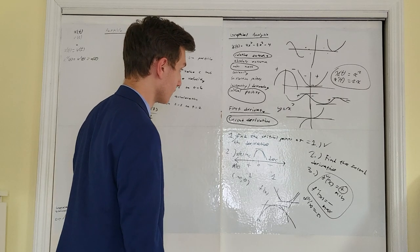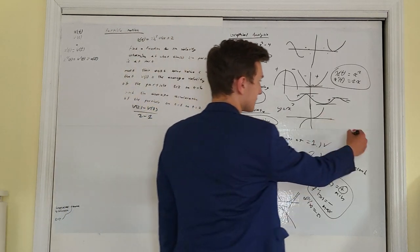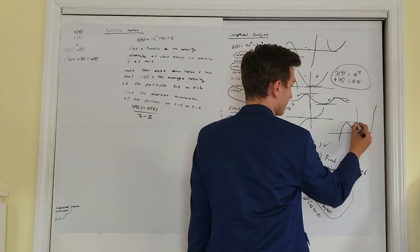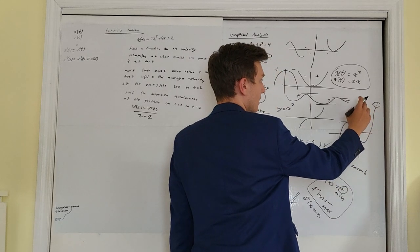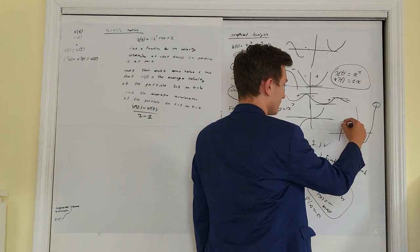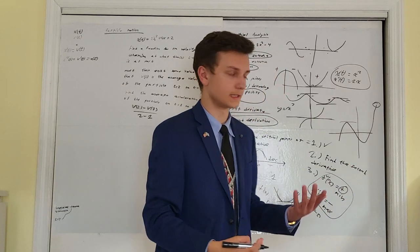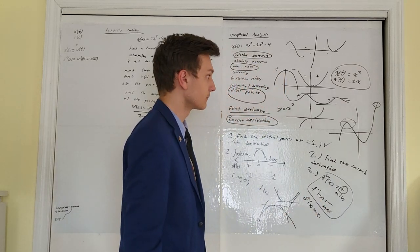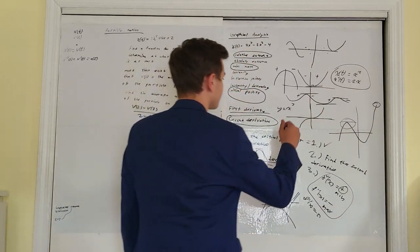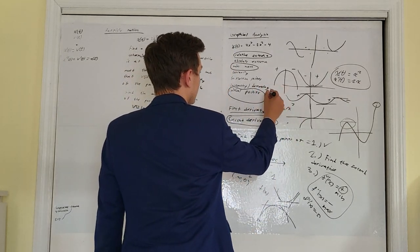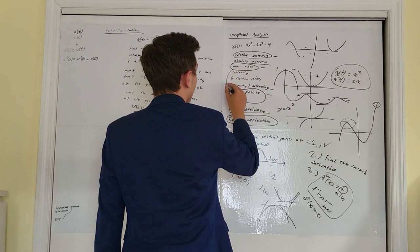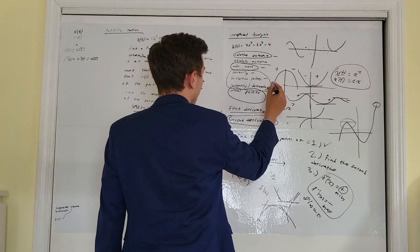We call these relative extrema because you can have a function with a local hump that is a relative maximum even though there's a bigger y-value elsewhere on the graph. In the relative surrounding area it's a maximum — that's why we use the word relative. We'll cover absolute maximums shortly. Now let's talk about concavity and inflection points.